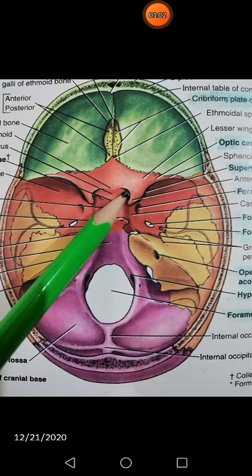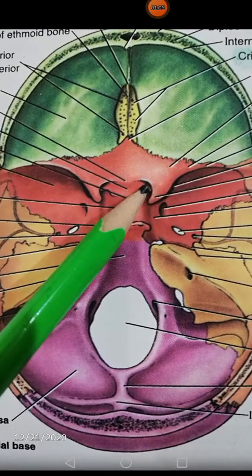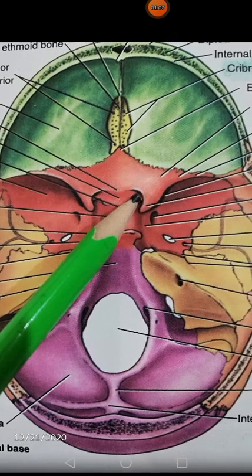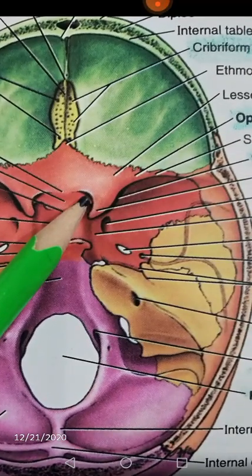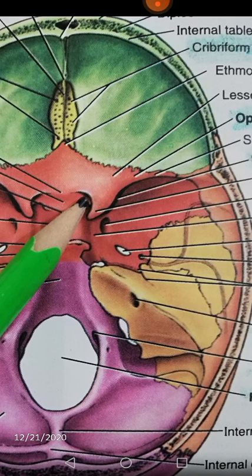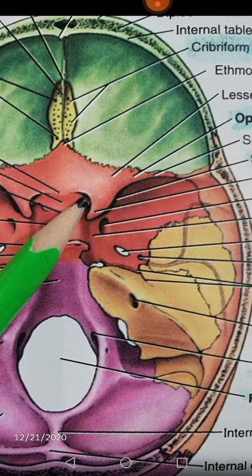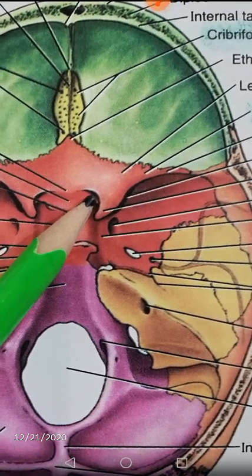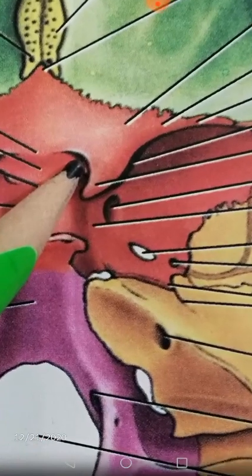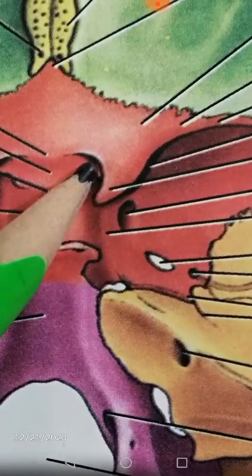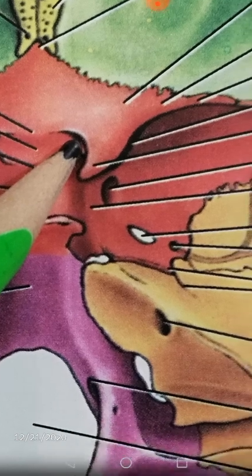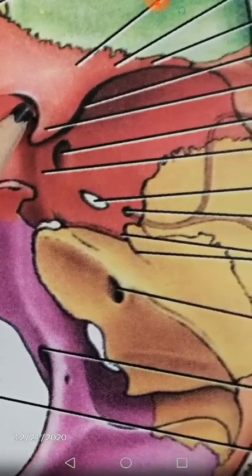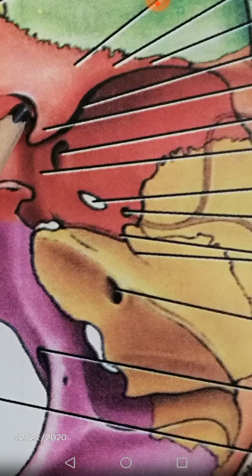My pencil is pointing towards the optic canal. Just at the margins of the greater wing of the sphenoid, just below that, the superior orbital fissure is entering into your orbit. Then you can see the darker, rounded blackish foramen — that is the foramen rotundum. Then focus on the whitish oval-shaped foramen — that is foramen ovale — and just lateral to it there is the foramen spinosum.